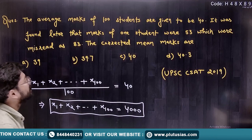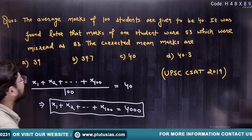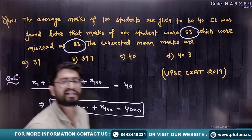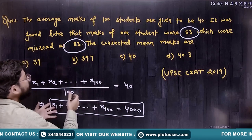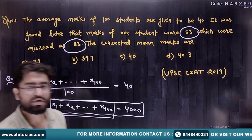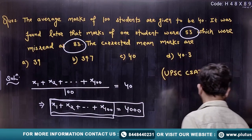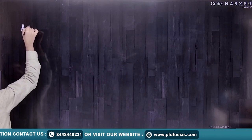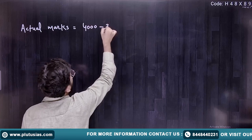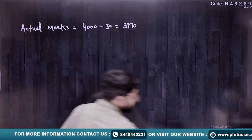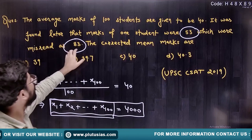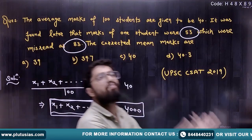It was found later that the marks of one student were 53, which were misread as 83. So the actual marks are 53, but in the observation we took it as 83. That means we have 30 more marks included — 30 marks extra in the sum.